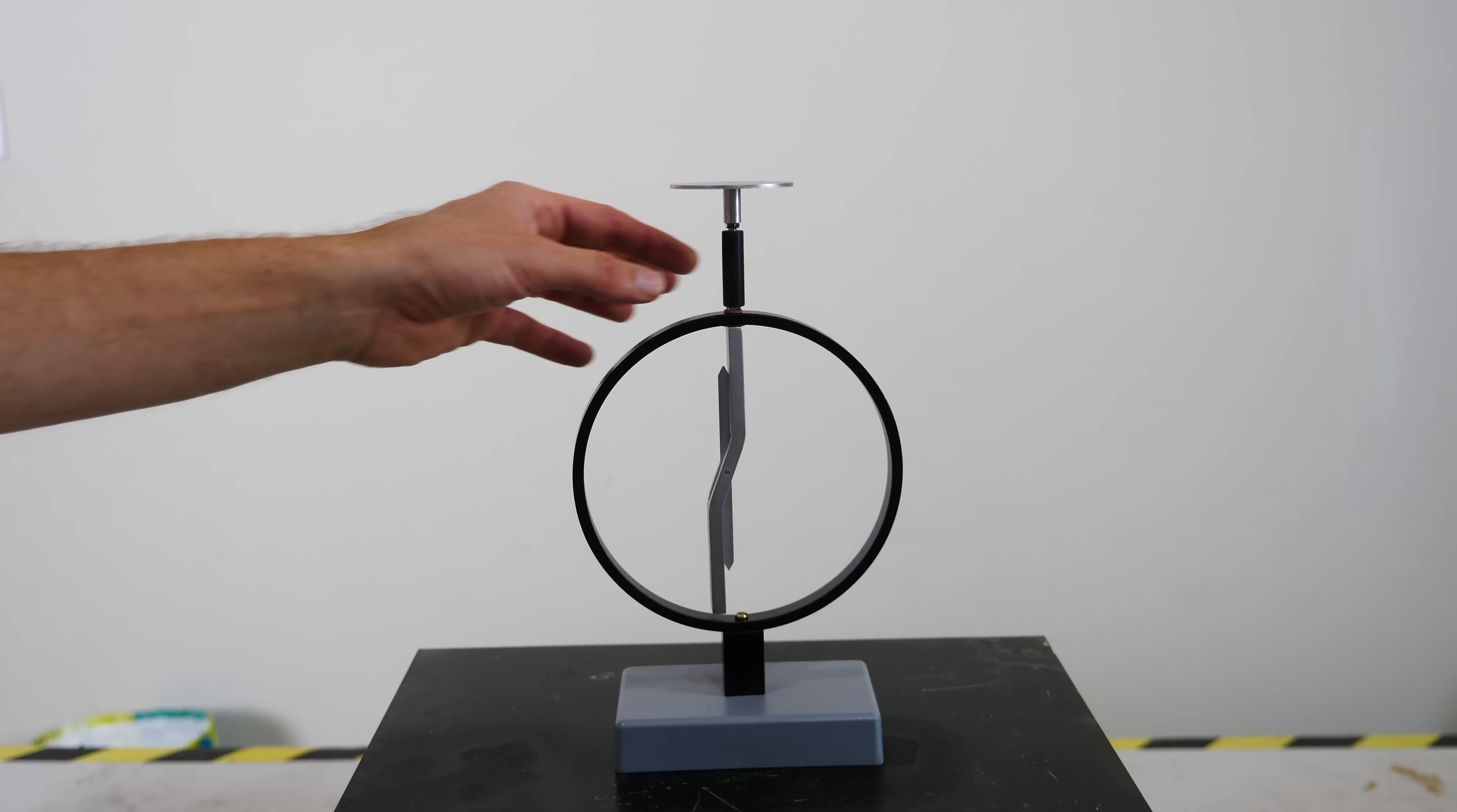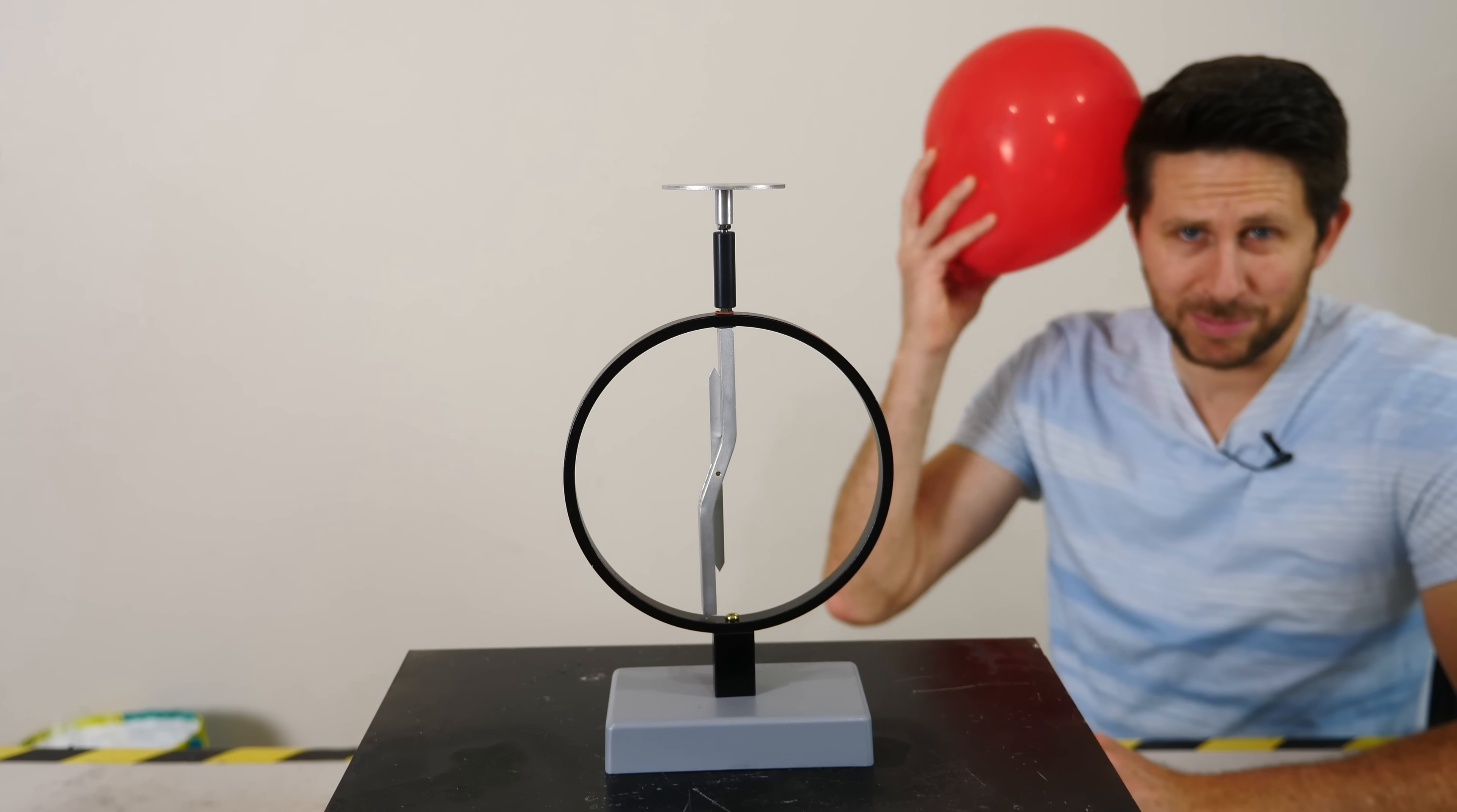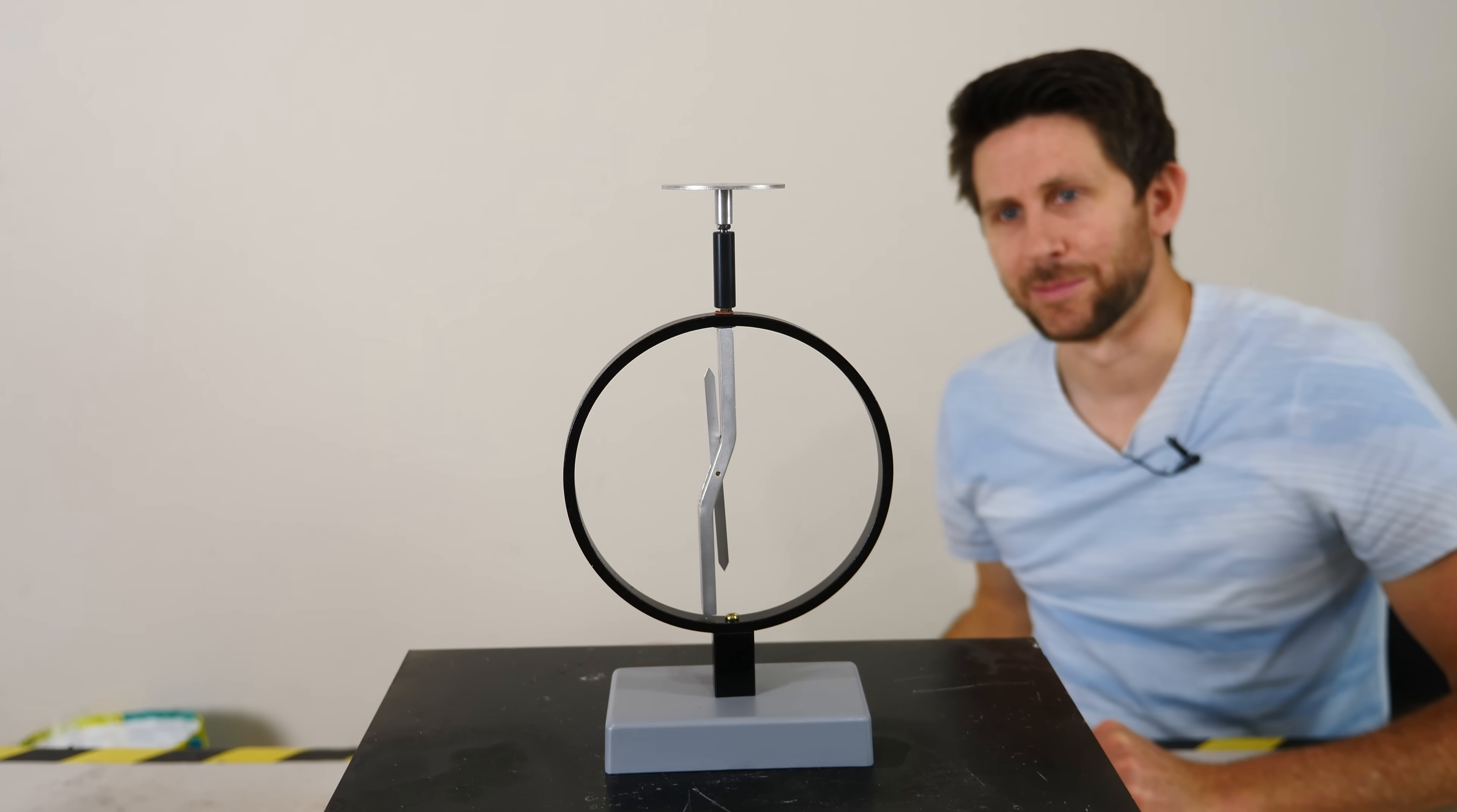This device here is called an electroscope, and what it can do is it can measure the amount of electric charge on this plate here. So let's try it out. An easy way to get an electric charge on this is just to use a balloon. When I rub the balloon on my head, I scraped off some electrons from my hair and they're stuck on the balloon now. So I can wipe them onto the plate. And you can see the needle move.